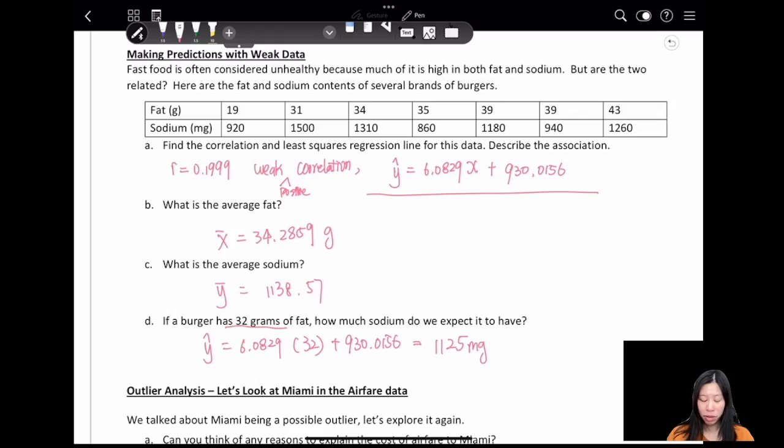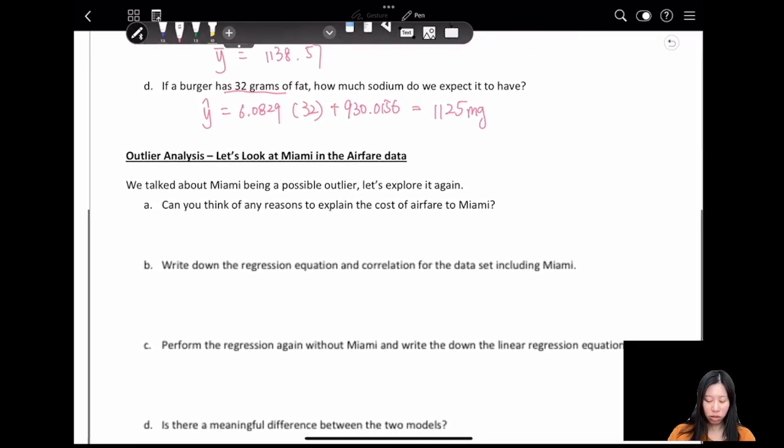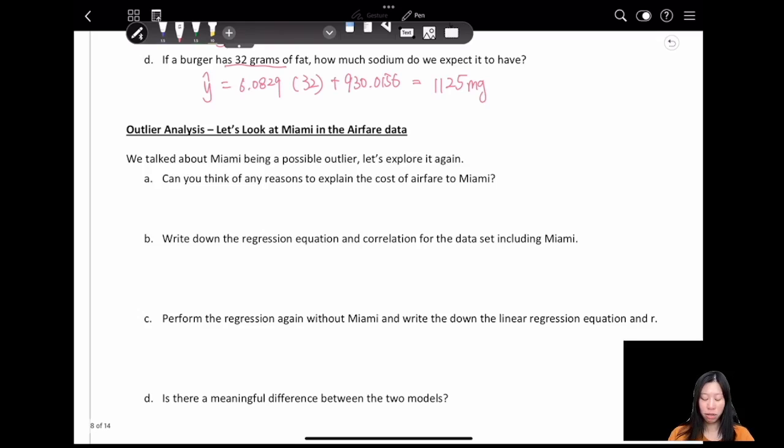Okay, the outlier. Now let's take a look back at our Miami flight airfare data. We talked about Miami being a possible outlier. Why is that? Because it has a really big residual, right? It has the largest residual. Can you think of any reason to explain the cost of the airfare to Miami?